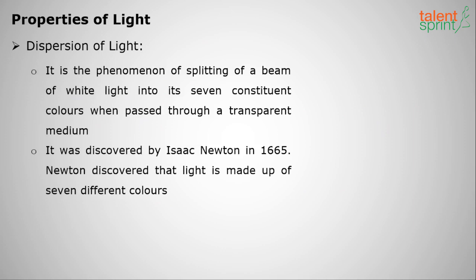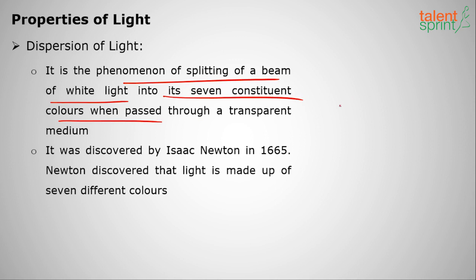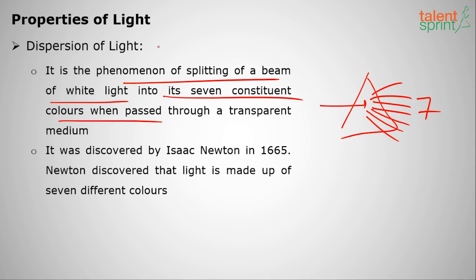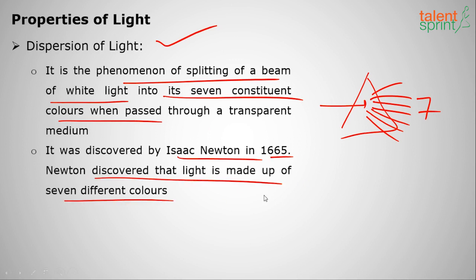Dispersion of light is the phenomenon of splitting a beam of light into seven constituent colors. As seen with a prism, white light disperses into VIBGYOR. This was discovered by Isaac Newton in 1665, showing that light is made up of seven different colors.